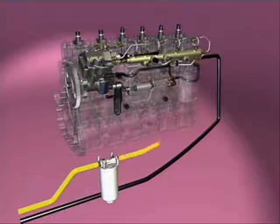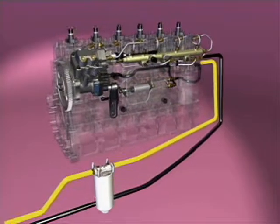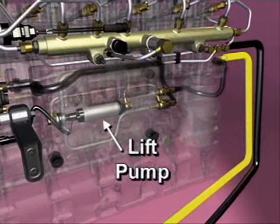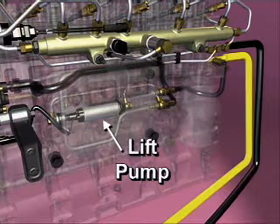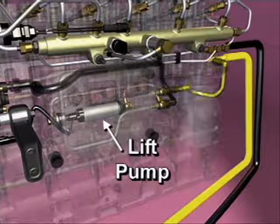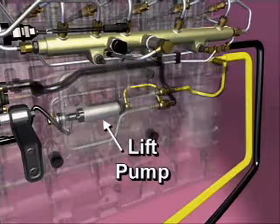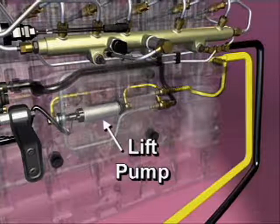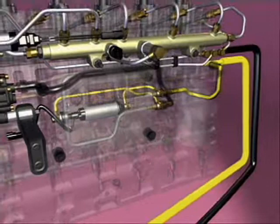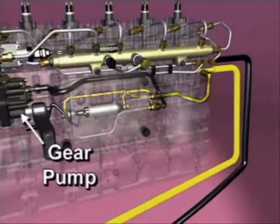Fuel leaves the pre-filter and flows to the inlet of the ECM cooling plate. The lift pump is controlled by the ECM and runs for approximately 30 seconds whenever the key switch is turned to the run or start position. The output from the electric lift pump ensures that the gear pump is primed so the engine can start quickly.